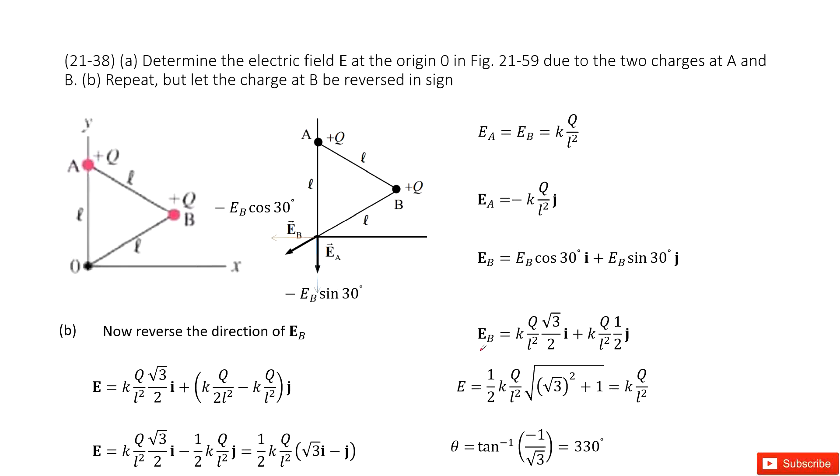So similarly, we can write EB as a vector that looks like this one, and EA keeps the same. And in this way, we can write down the total electric field as the addition of two vectors EA and EB.